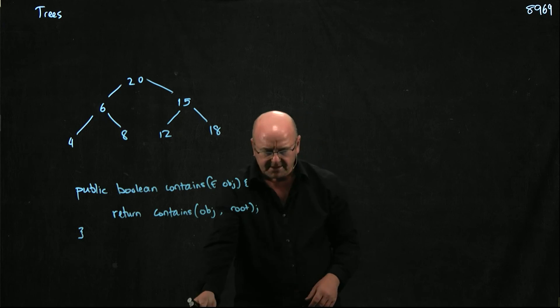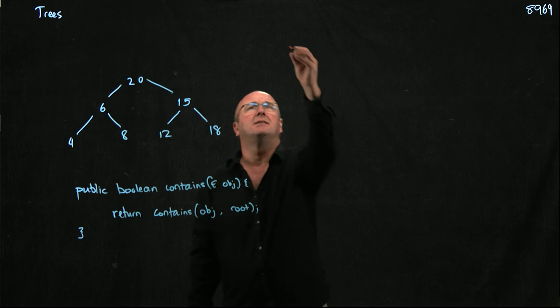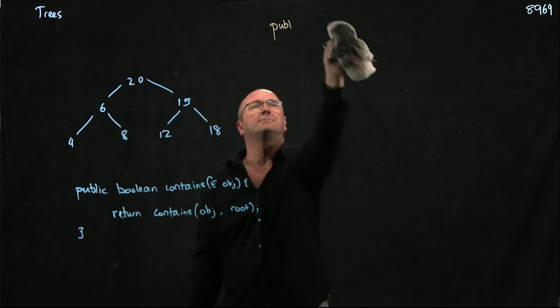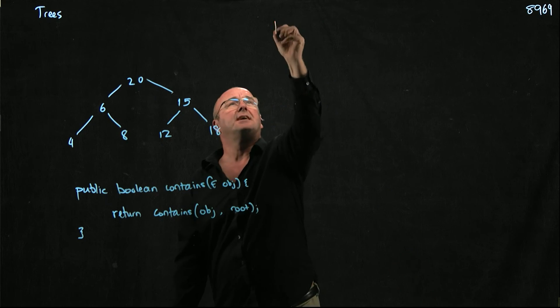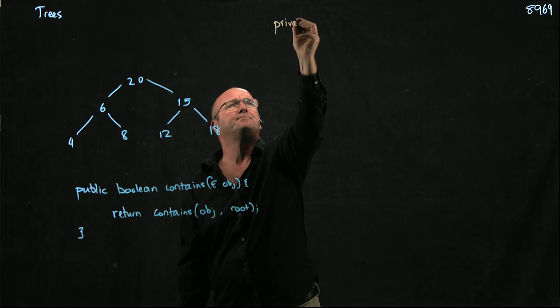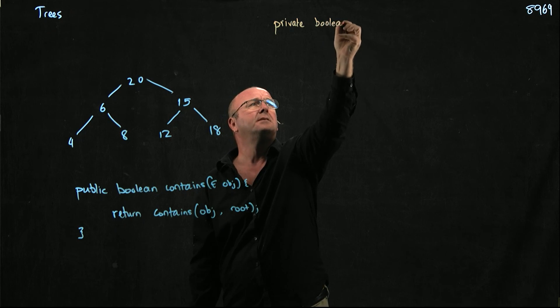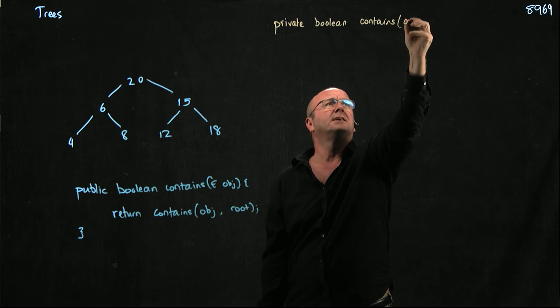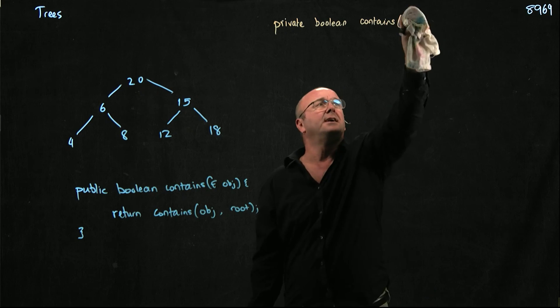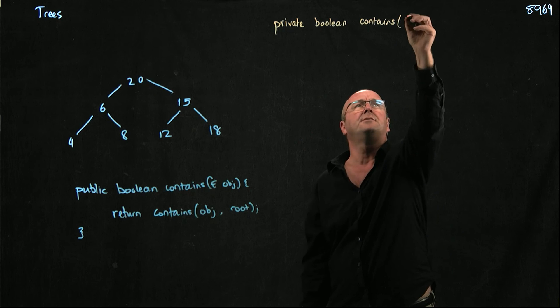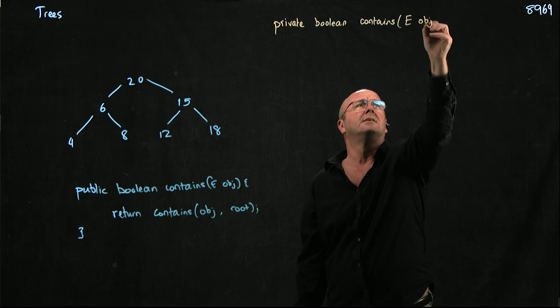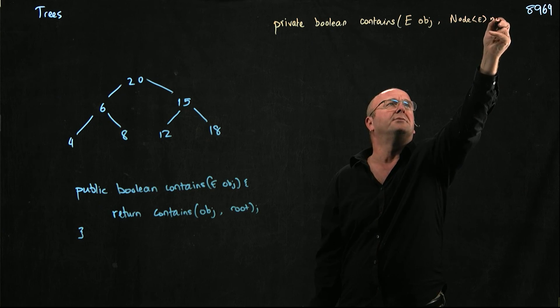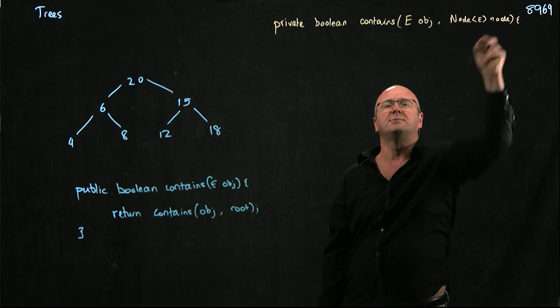And so we can have a recursive find method. So let's have a private. Let's mess with people so they can't access it. Boolean contains. It's going to take an e object. That's the thing that we're looking for. And a node e node. And of course, we start off with root, right?